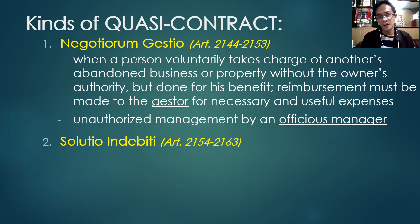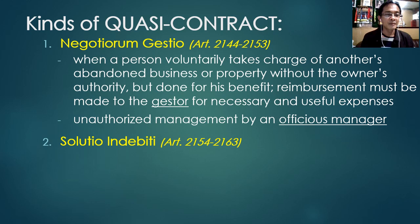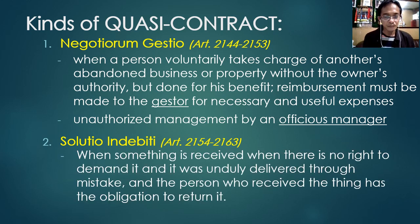For example, if a neighbor's property is on fire and the owner is absent, you take care of it by buying a pail and fire extinguisher to put out the fire — those are necessary and useful expenses. But if you also buy cactus plants and decorations to beautify the surroundings, those are not necessary and useful expenses. When the owner returns, he only has to reimburse the fire extinguisher and pail, not the decorations. Take note: negotiorum gestio is also called unauthorized management.